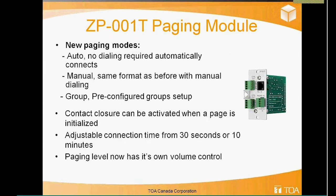The new ZP module has three paging modes. Auto allows you to set up a predetermined group — pick up the phone, hit the page button, and it automatically goes to your assigned group. Manual works as before — you manually connect, hit page, then press codes like zero-one-pound for zone one, zero-two-pound for zone two, zero-nine-pound for all-call. Group is similar to auto but with selectable predetermined groups, so pressing zero-one-pound selects a group that could consist of multiple zones — for example, zones one, two, and three with a single button press.